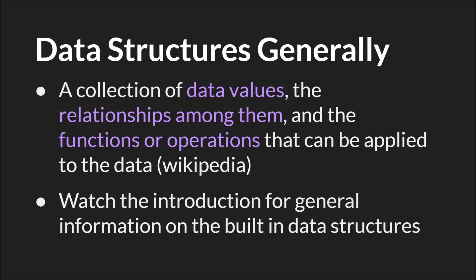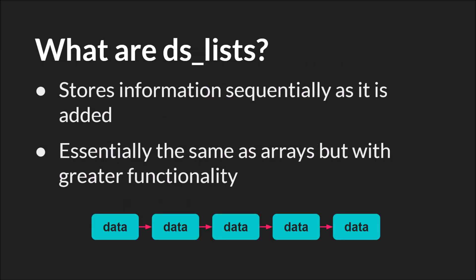One thing I want to note is that in these individual tutorials on the specific data structure, we're not going to cover the general data structure quirks that are true for all six GameMaker data structures, such as memory management. For that you should watch the introduction part one and part two. A DS list is a data structure that stores information sequentially as it is added — essentially the exact same as an array but with greater functionality.